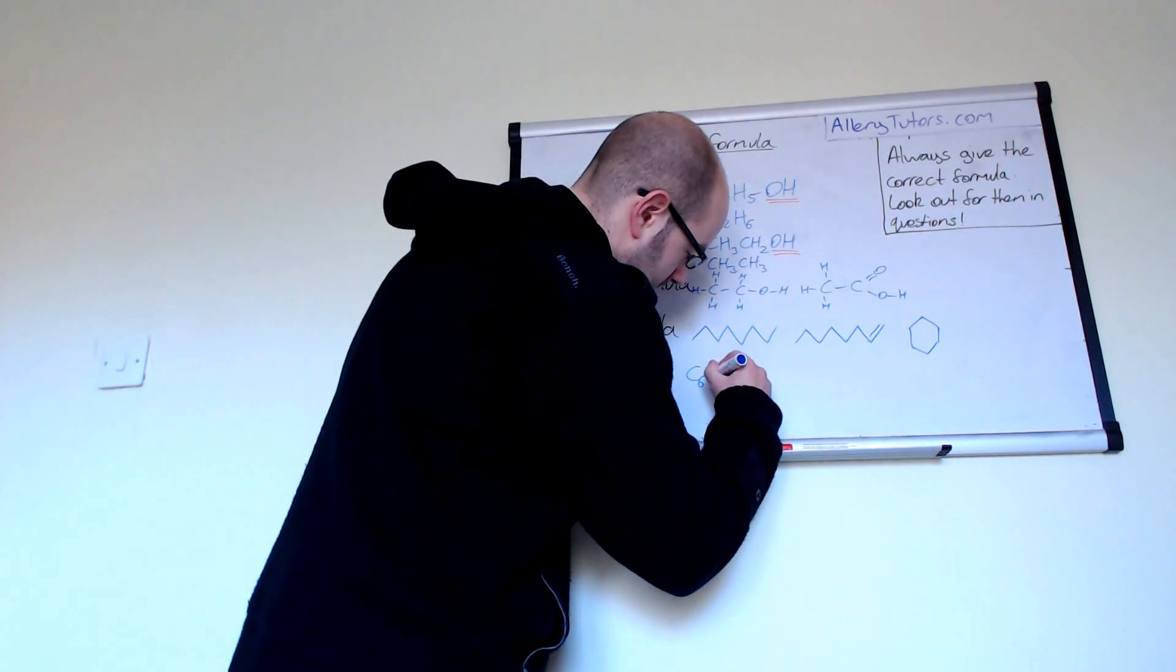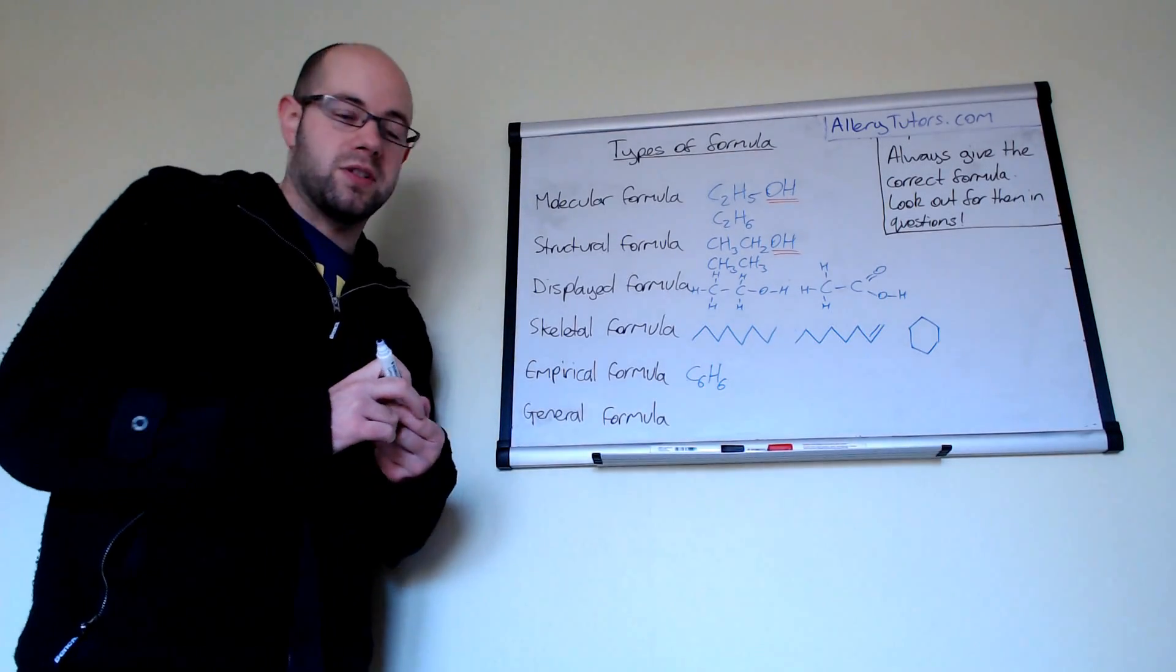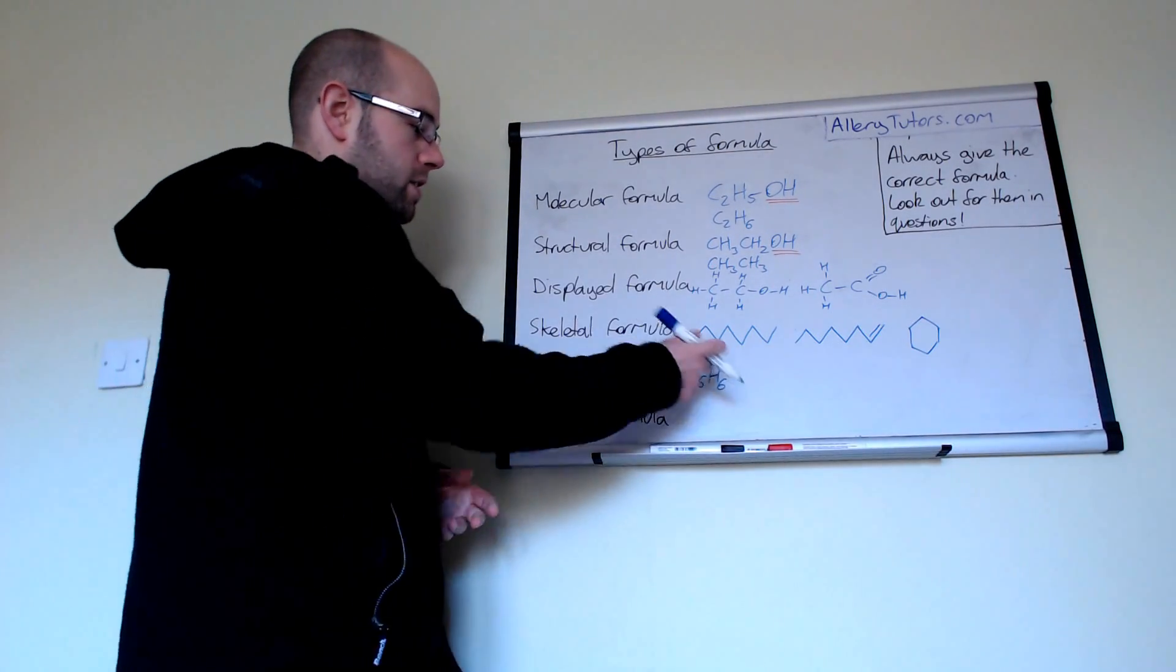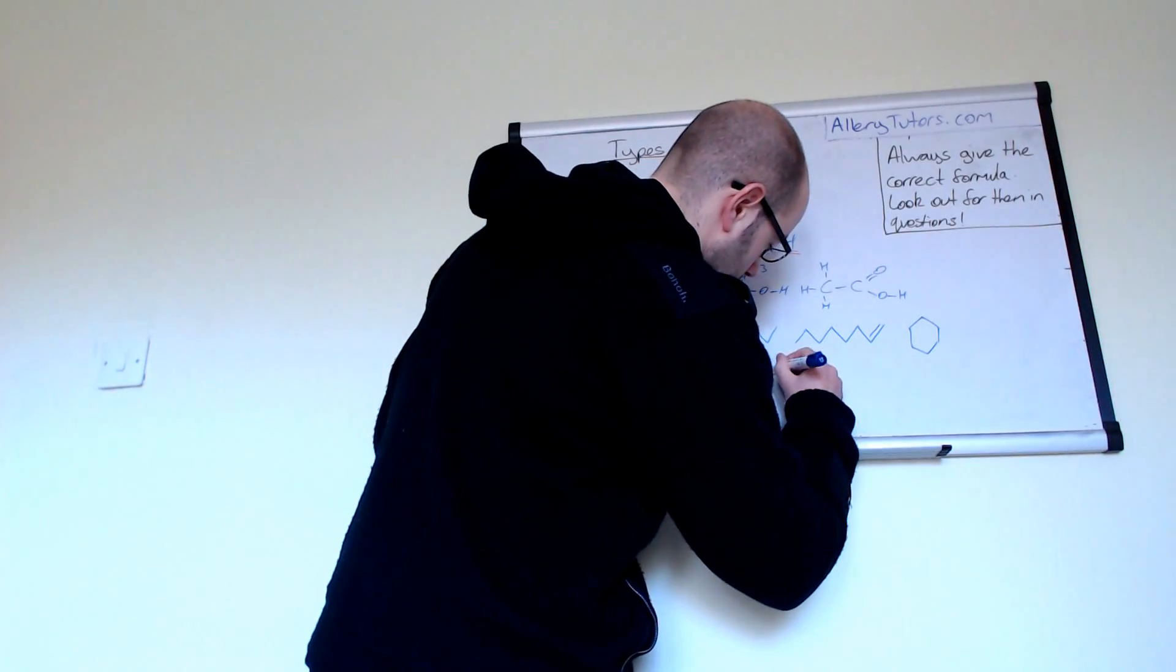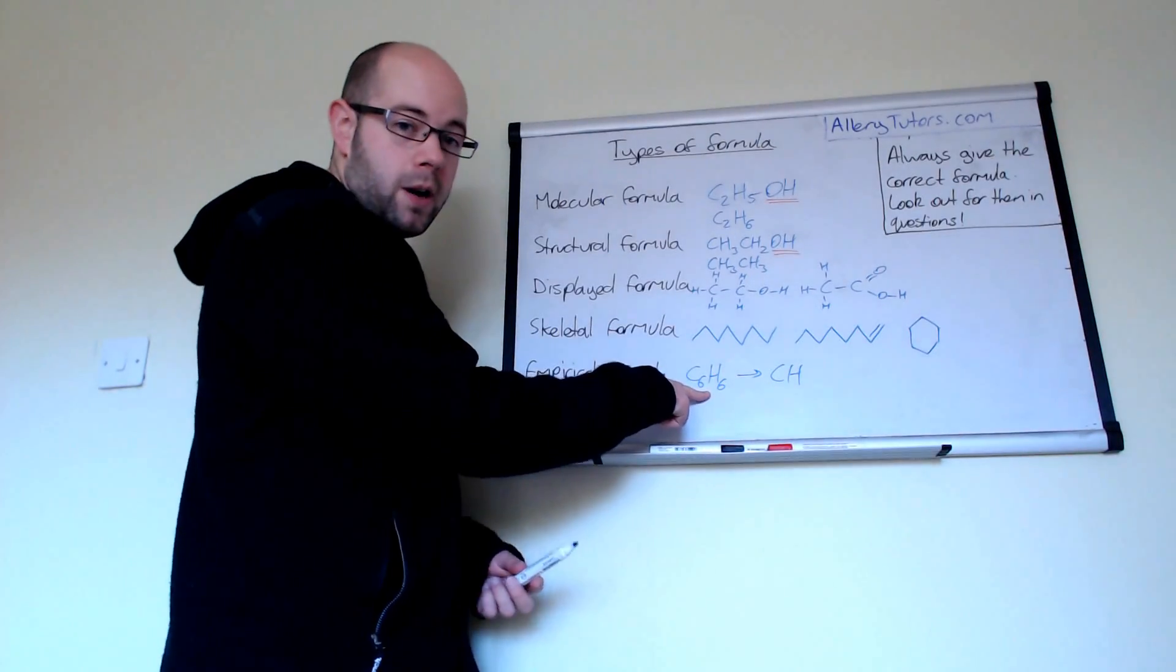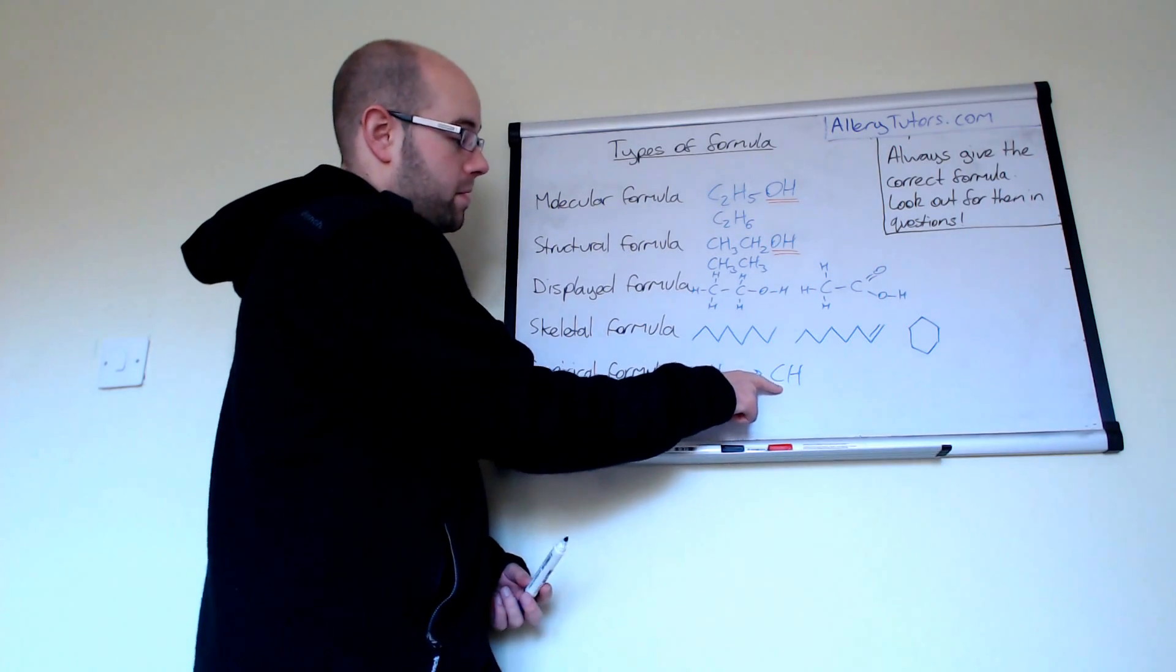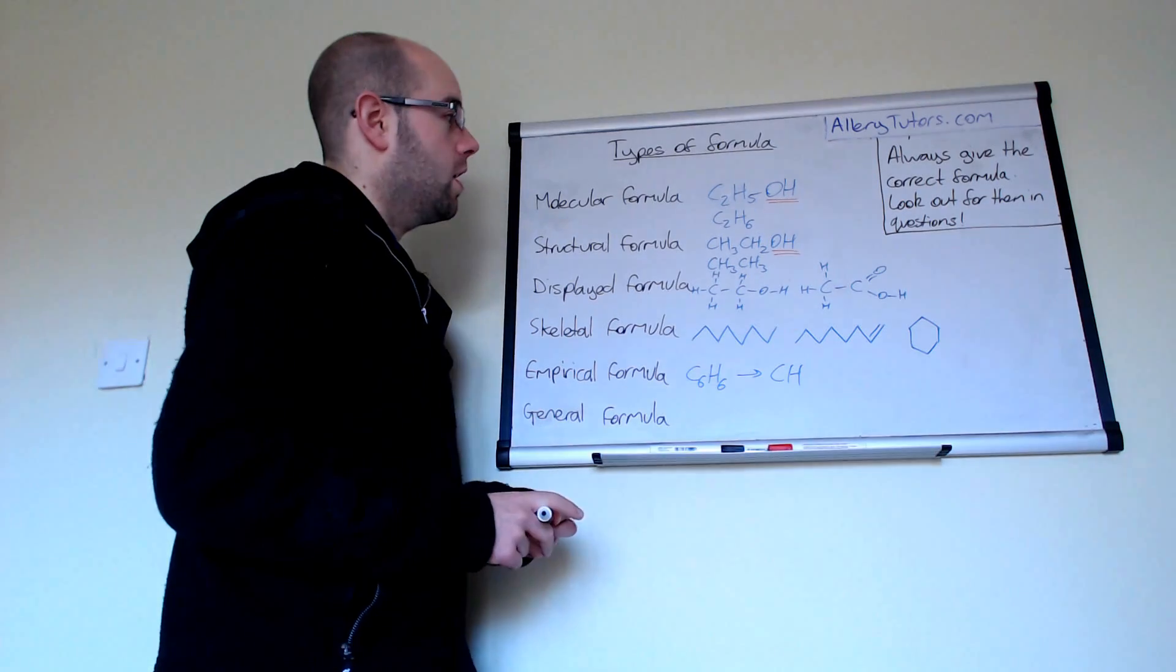For example if we had something like benzene which might be C6H6 which is normally found in petrol, it's an additive in fuel, then benzene can be simplified to an empirical formula of CH because this is the molecular formula of benzene and the empirical formula is the simplest whole number ratio.